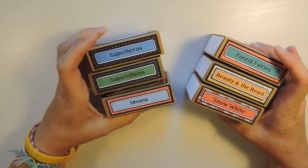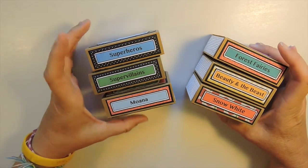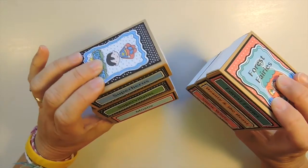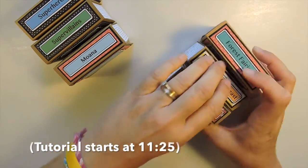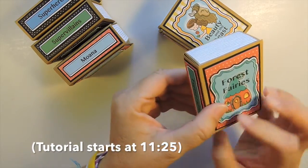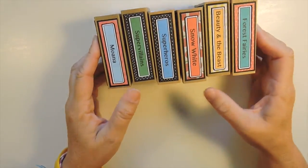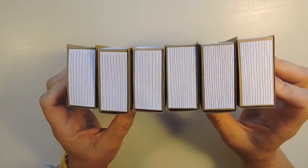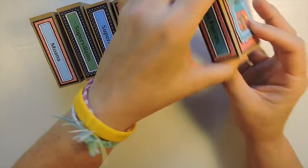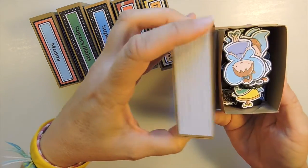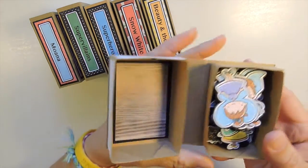I have three new sets. I have Super Heroes, Super Villains, and Moana. So what I'm going to do is show you guys how to make the little boxes that they go into. It's supposed to look like a little story book, so you can have all of these on your shelf and they can all be standing up and they look like little books. There's lines on the top and lines on the side, so it looks like a little thick storybook and you open it up and inside are all the little characters that go with it.